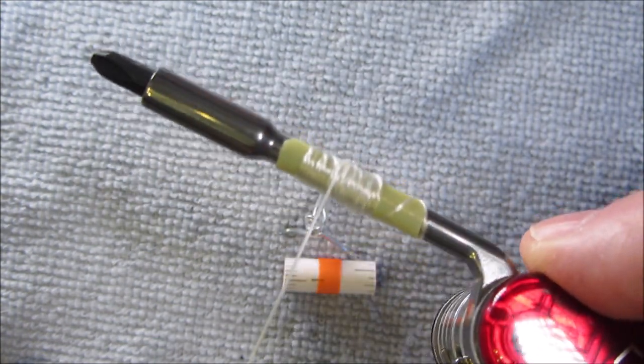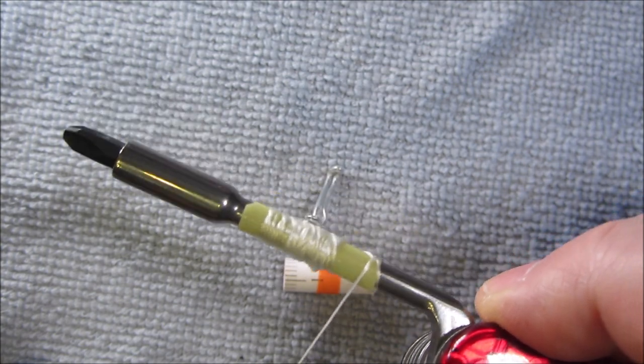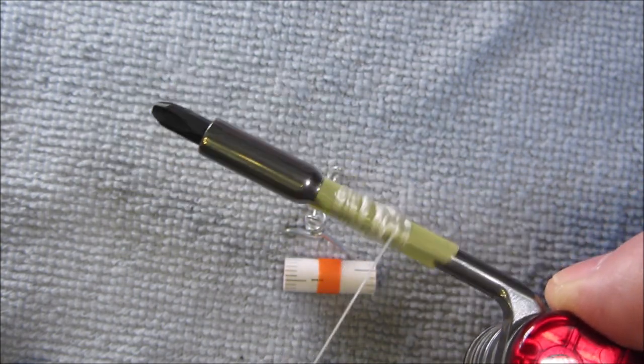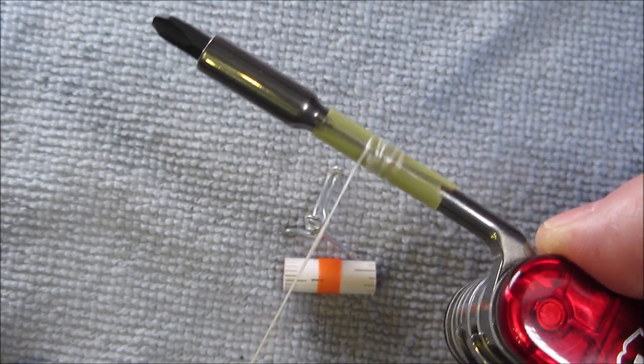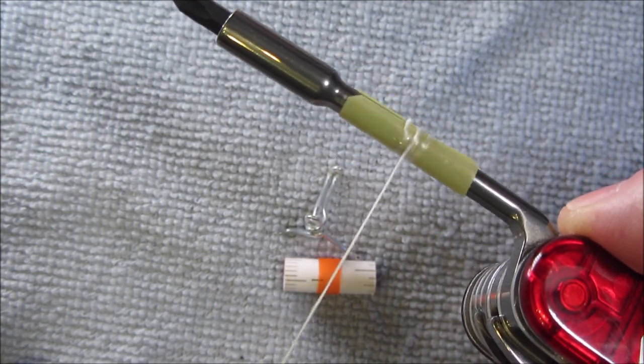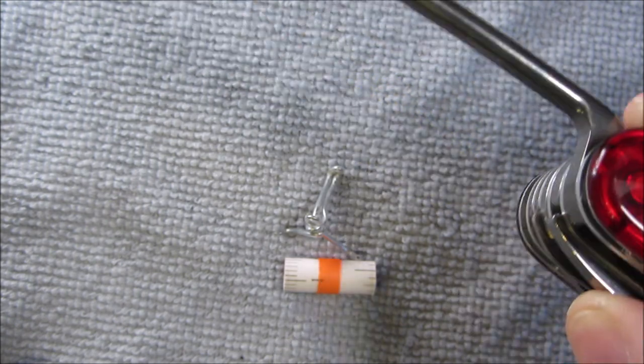So assuming you don't have any snags, here's how it works. You pull, and that's how it's dispensing. And then it breaks away when you pull it.